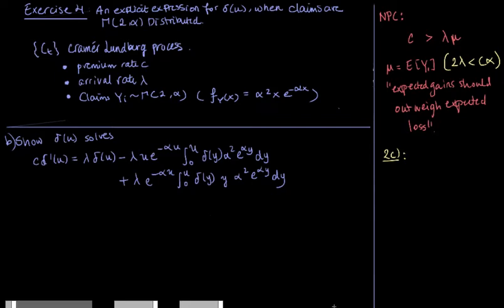And that is the result from 2c, where we have that the left derivative of delta multiplied by c is equal to lambda multiplied by delta of u minus lambda multiplied by the integral from u to u from the left of the survival probability in u minus y integrated with respect to the distribution of the claim sizes.